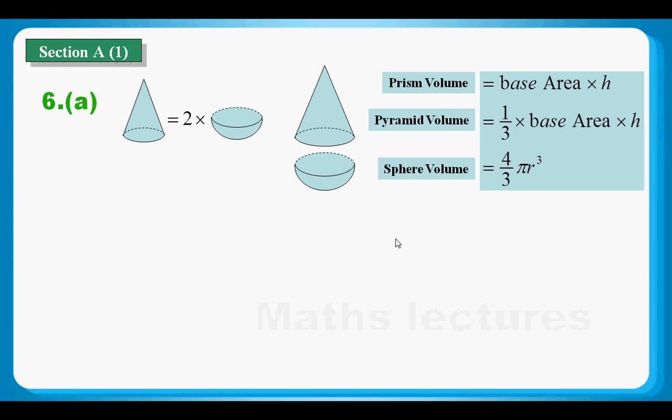It's said that the volume of the pyramid is equal to the double of the semi-sphere. So the equation is relatively easy to set in order to find out the radius.